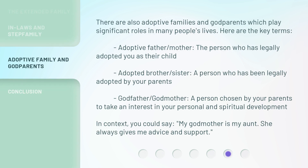There are also adoptive families and godparents, which play significant roles in many people's lives. Here are the key terms. Adoptive father or mother: the person who has legally adopted you as their child. Adopted brother or sister: a person who has been legally adopted by your parents. Godfather, godmother: a person chosen by your parents to take an interest in your personal and spiritual development. In context, you could say: My godmother is my aunt. She always gives me advice and support.